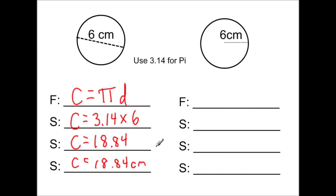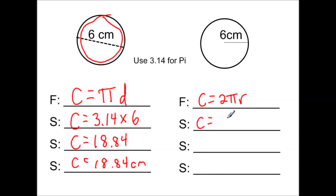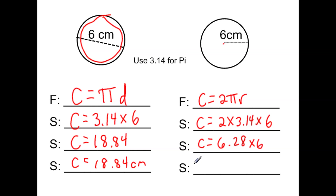Now using the second formula, circumference equals 2πr. Substituting in: 2 times 3.14 times the radius of 6. First, 2 times 3.14 equals 6.28, then multiply by 6 to get 37.68. So the circumference of that circle is 37.68 centimeters.